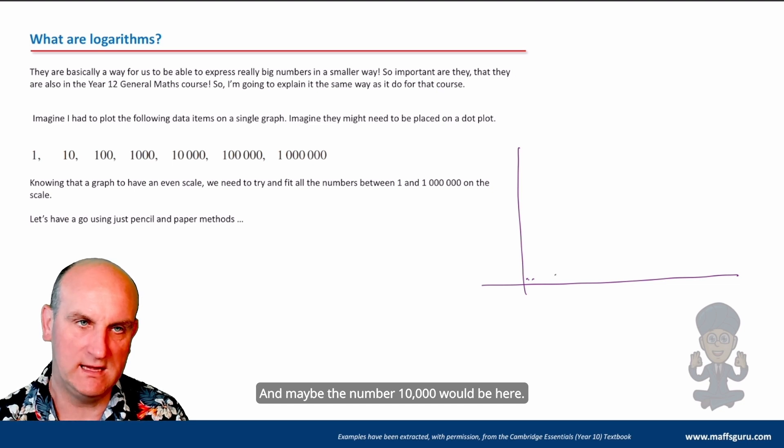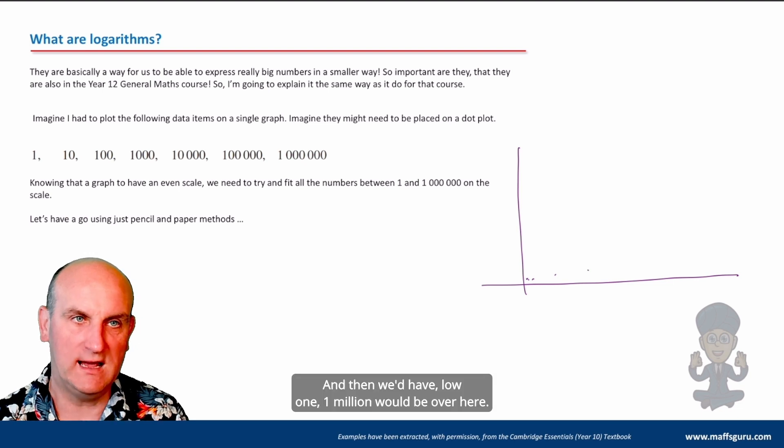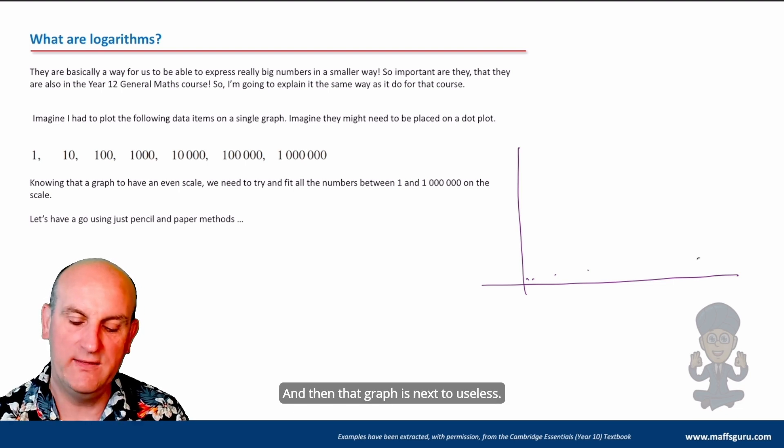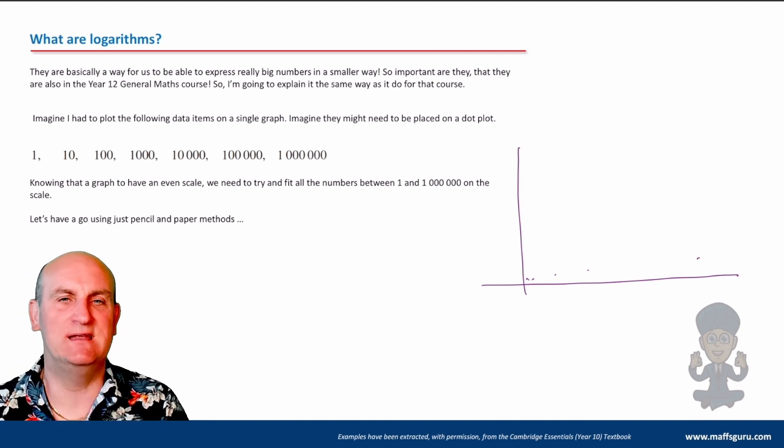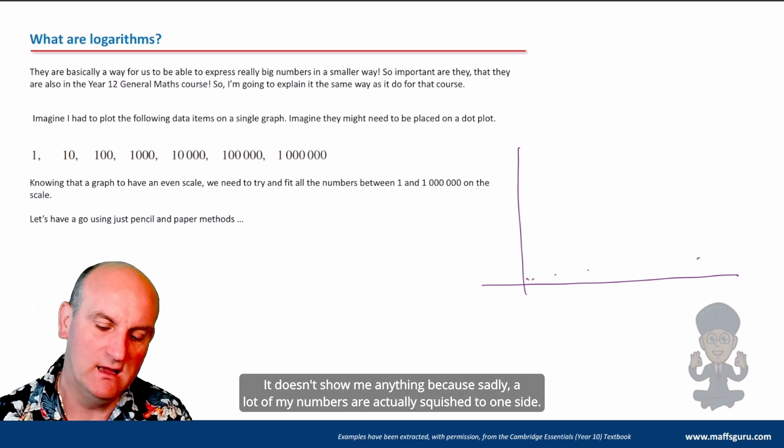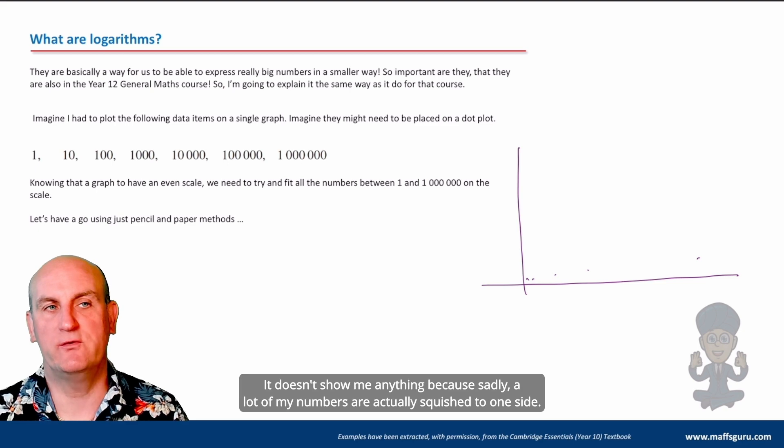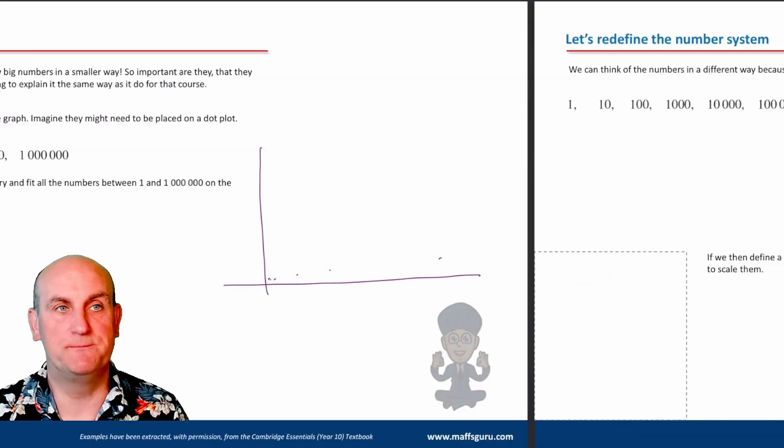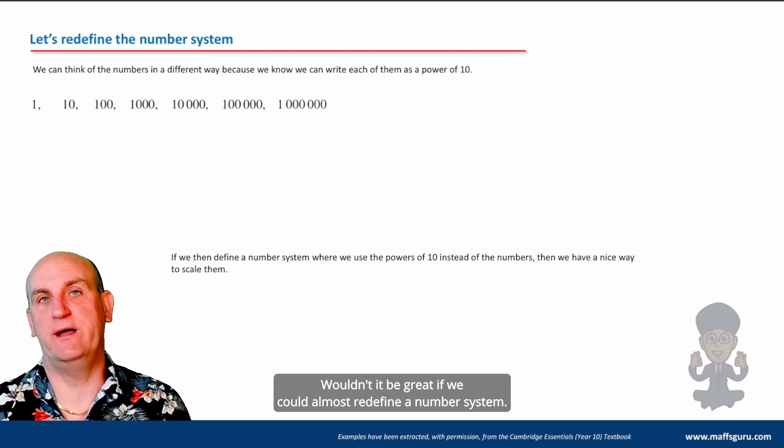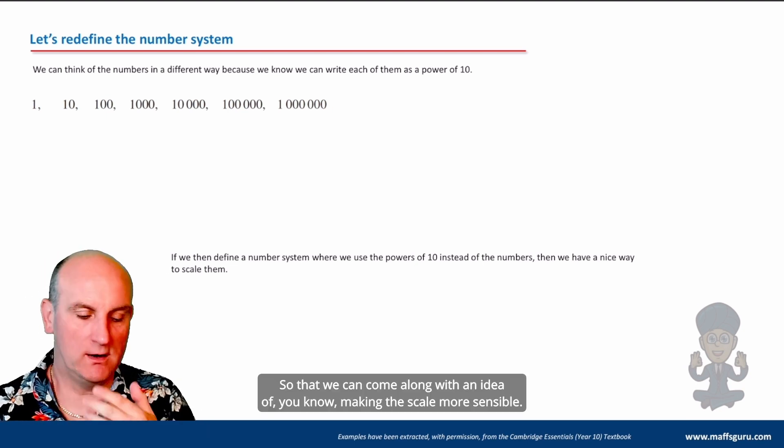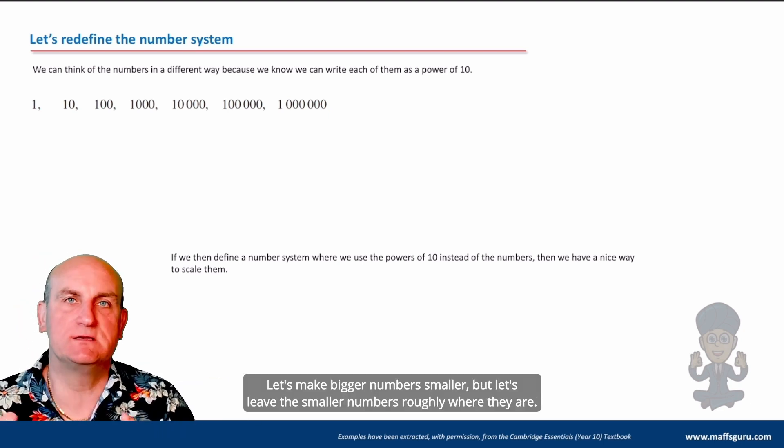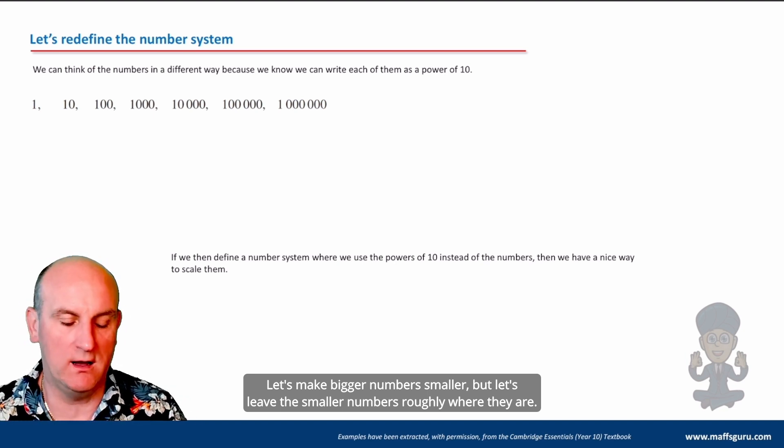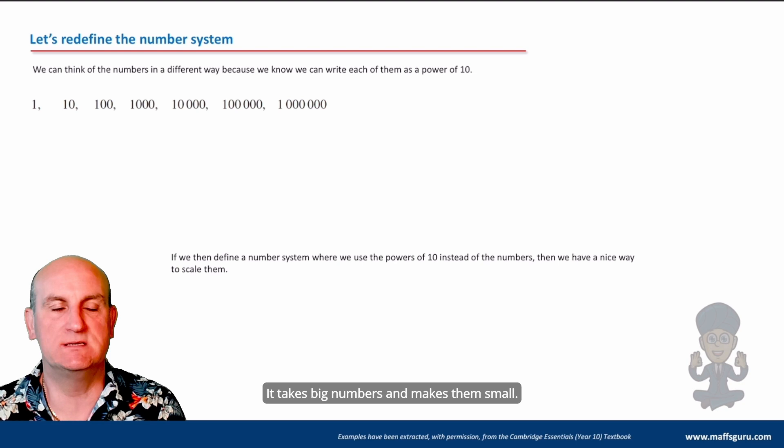If I was going to try and draw these numbers on a graph, where we basically just looked at the cell numbers or we did it as a dot plot, the number 1 would be here, and the number 10 would be here, and the number 100 would be here, and so on. And then that graph is next to useless. It doesn't show me any pattern because sadly, a lot of my numbers are actually squished to one side.